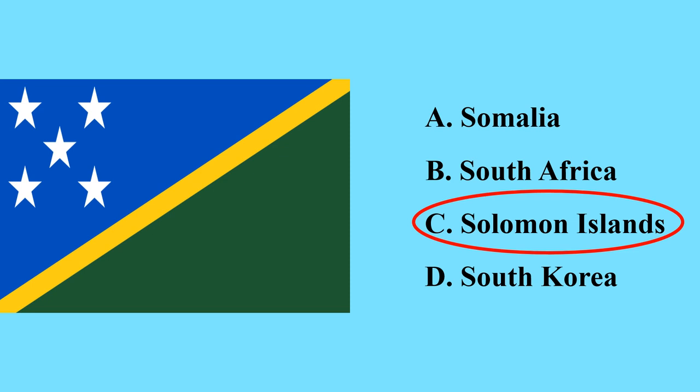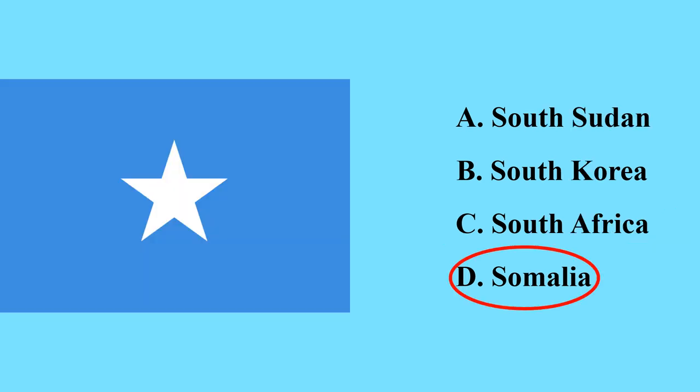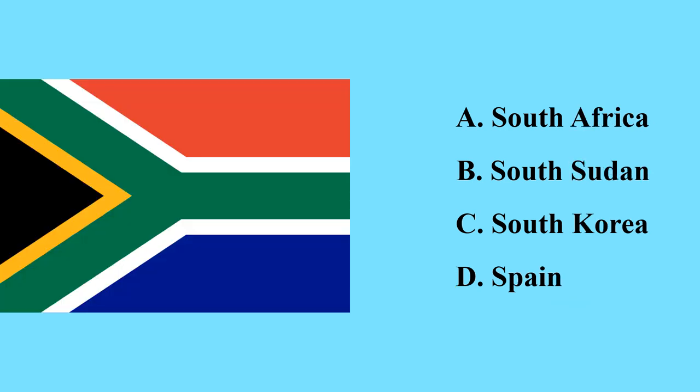This is the flag of the Solomon Islands — a country in Oceania. This is the flag of Somalia — it is a country in the Horn of Africa; its capital city is called Mogadishu.